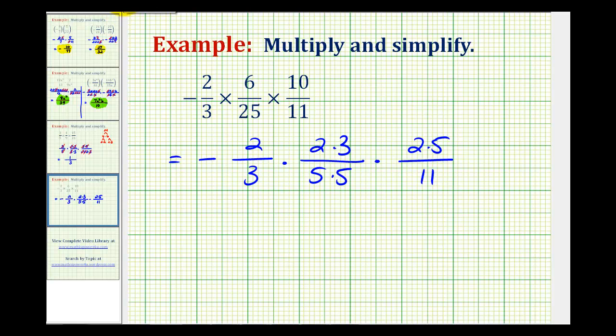Now we simplify. Here we have a common factor of five that would simplify to one. And then we also have a common factor of three that would simplify to one. And that's all that simplifies here.